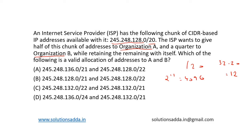Since one half of these 4096 addresses has to be given to organization A, let's write 20 in binary. The first 8 bits would be continuous ones, the next 8 would also be continuous ones, and the next 4 bits for 20 would be 1111. In order to assign half of 4096 to organization A, we make the 12th bit as 1, meaning the next bit can be assigned as 1.